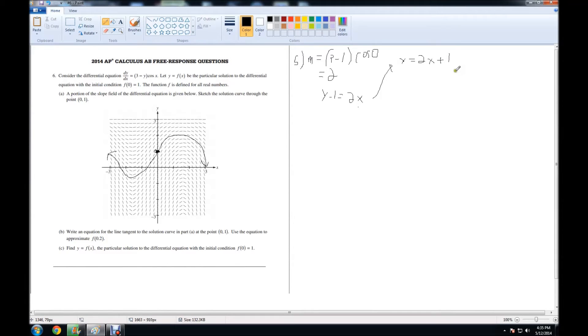Plugging in point 0.2, because that's what we're approximating. Point 0.2 is 1/5. 2 times 1/5 is 2/5. So y(0.2) equals 2 times 1/5, which is 2/5, plus 1, or 5/5, equals 7/5, or 1.4. And this is your answer for part B.